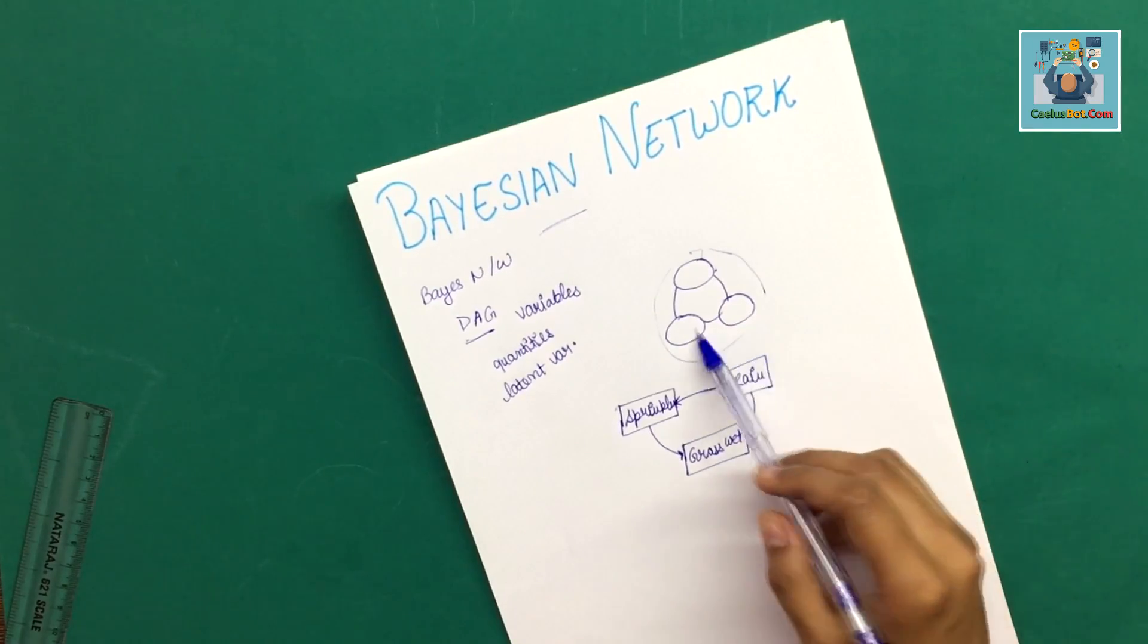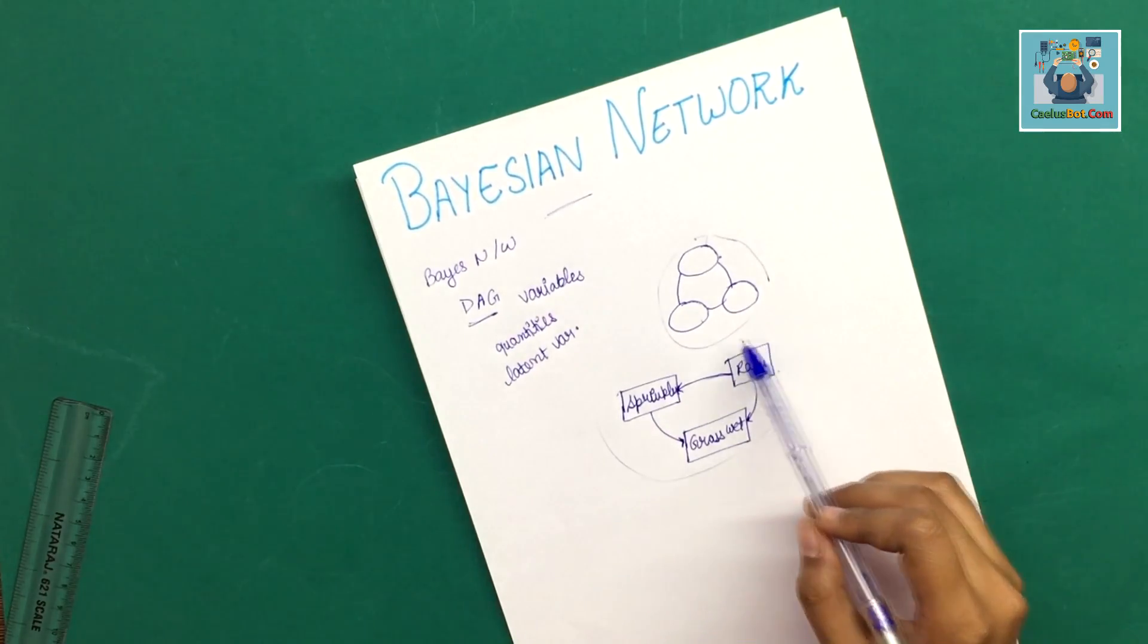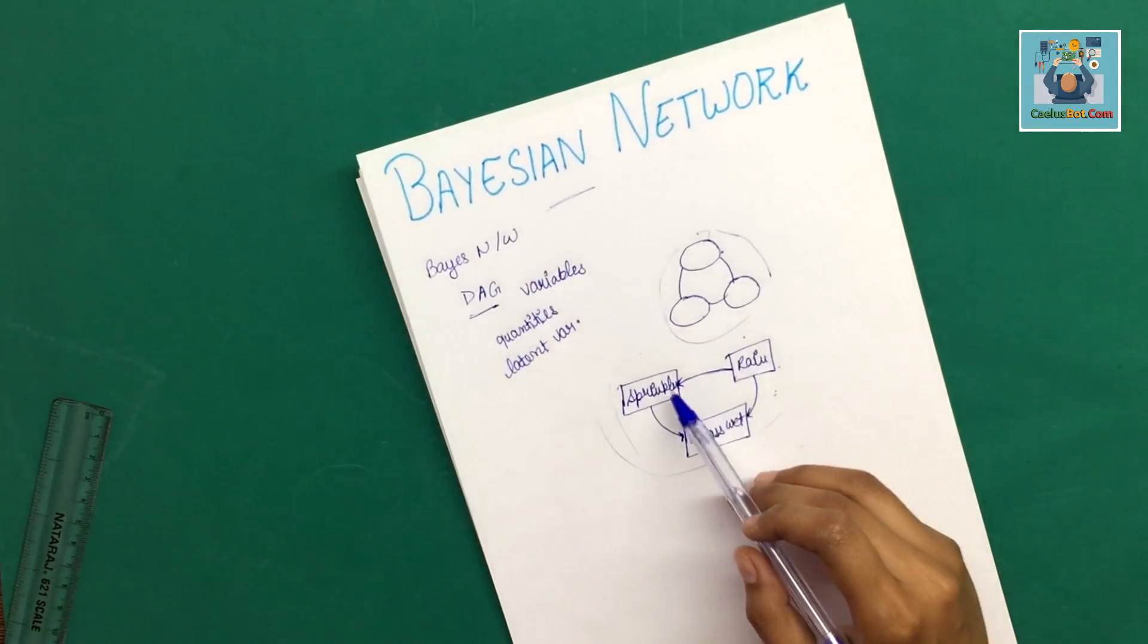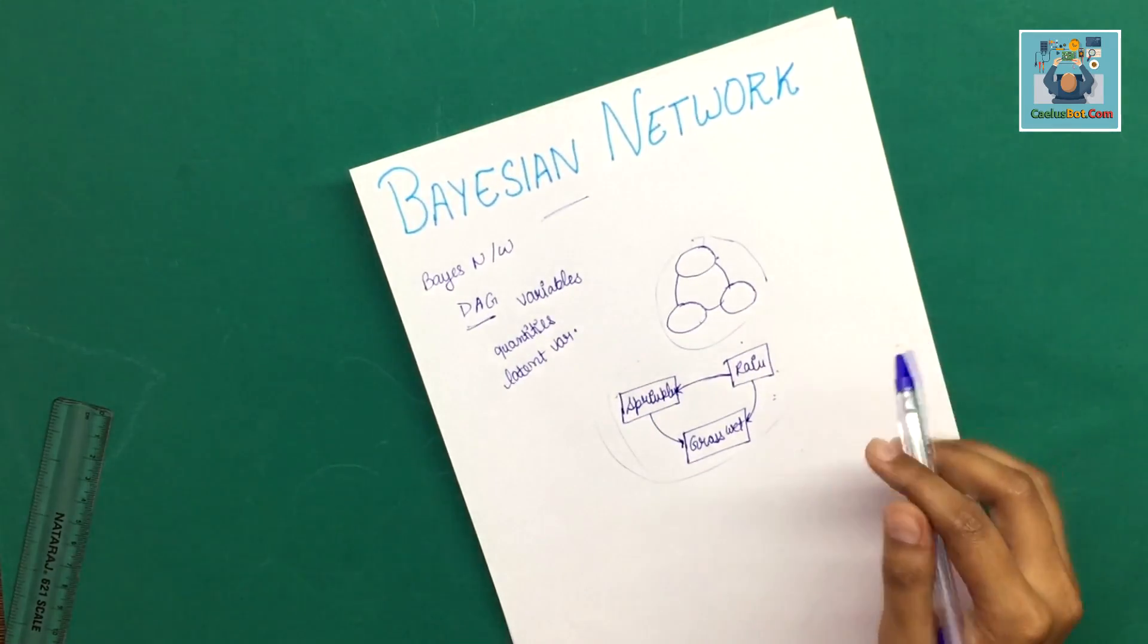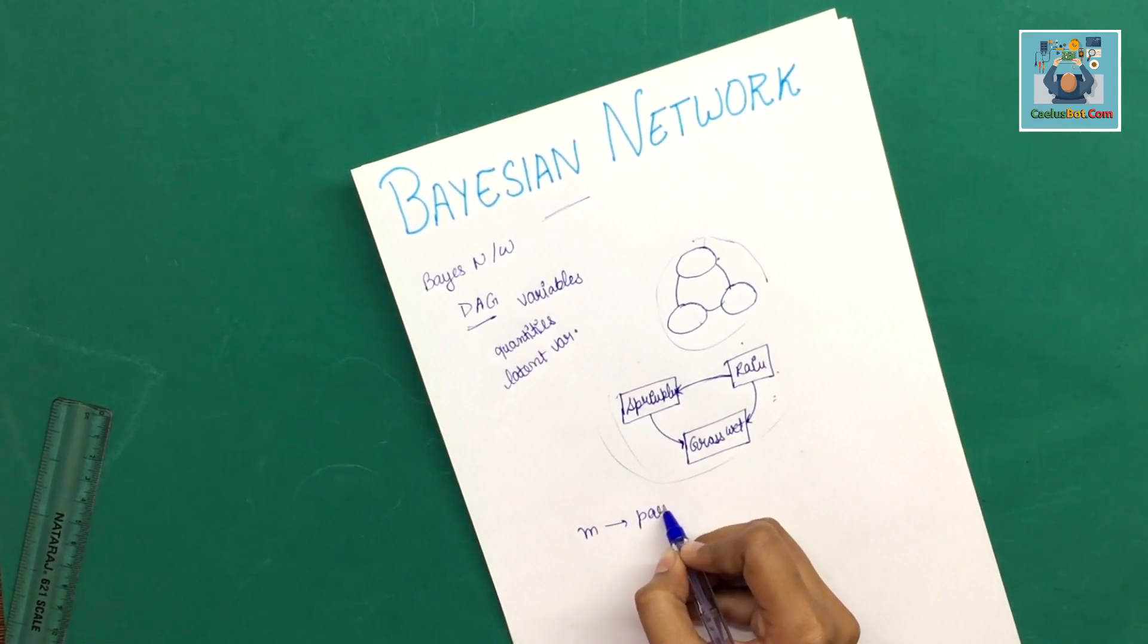It checks probability at each step. This Bayesian Network is a directed acyclic graph. If we take an example of M, what is M? We have a parent node.